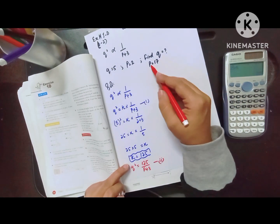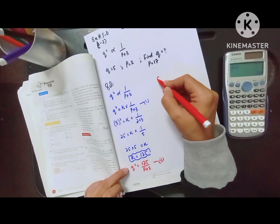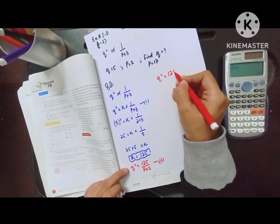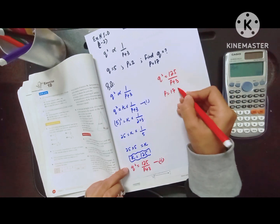To find the value of q by putting the value of p equals 17. So q² equals 125 divided by p plus 3. Put the value p equals 17, then q² equals...